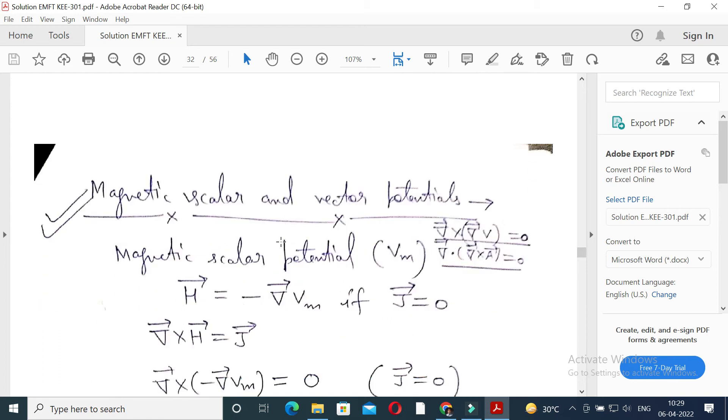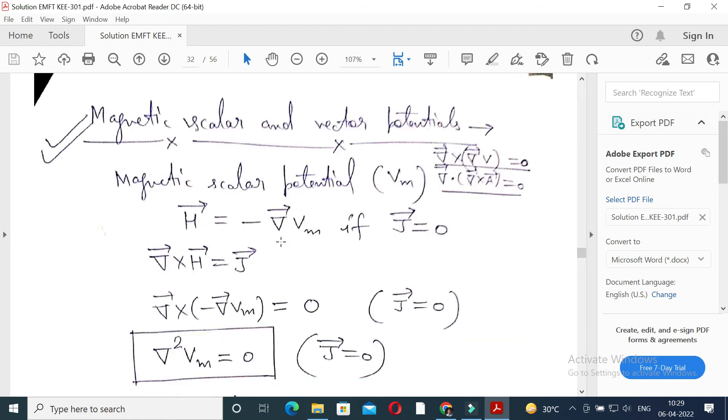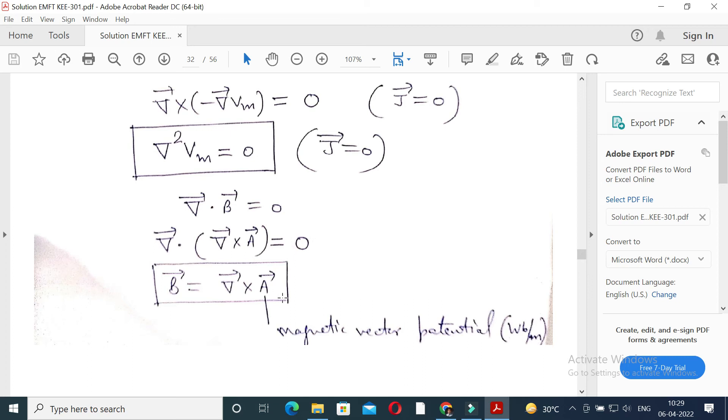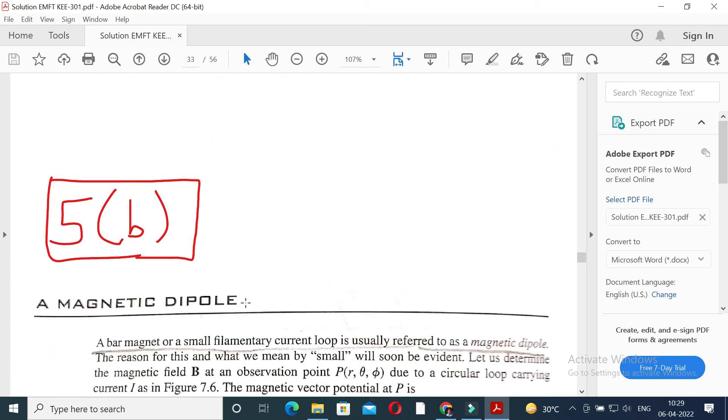Magnetic scalar and vector potentials. We know electric potential is related to electric potential E is equal to minus del V. Similarly, magnetic field is related to magnetic potential H is equal to minus del Vm. Vm represents magnetic potential, scalar potential. Magnetic vector potential is A vector. If A is given, we can find B vector is equal to del cross A. Question number 5b: magnetic dipole.